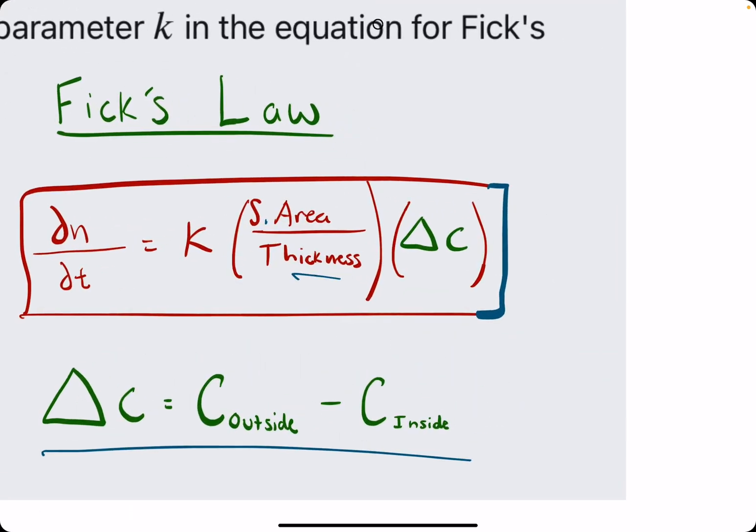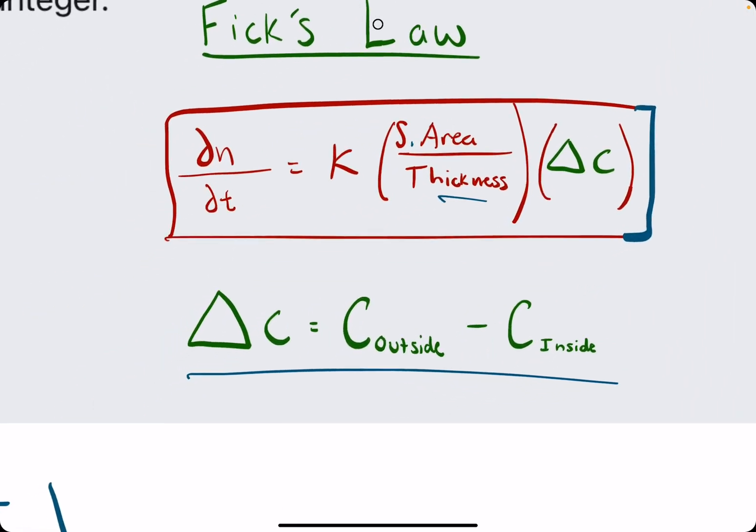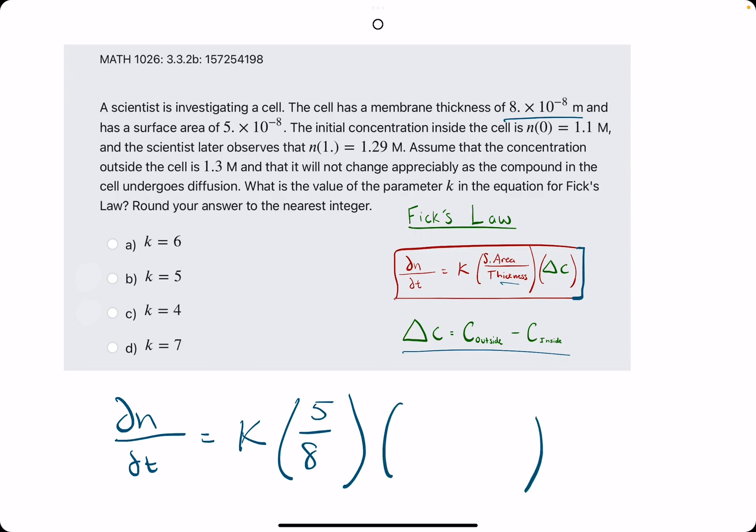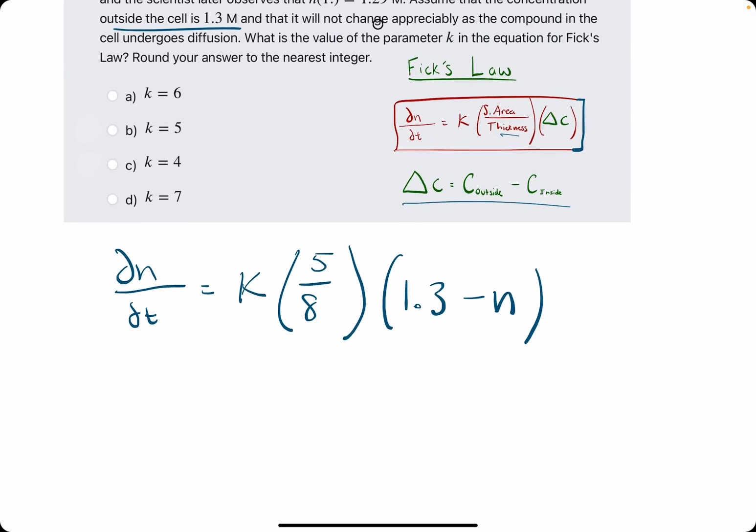Now, the delta c is the change in concentration, outside minus inside. The outside is always a constant value. So, they tell us the concentration outside is 1.3. But it's the inside concentration that is the changing one. And that is represented with n. So, we set it up like this.